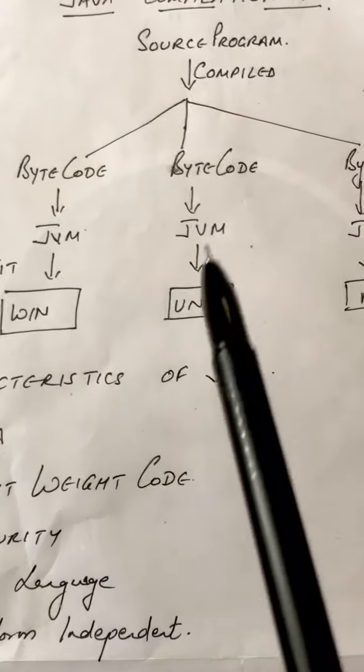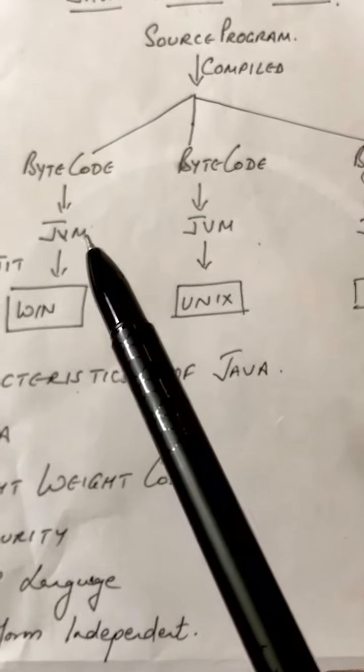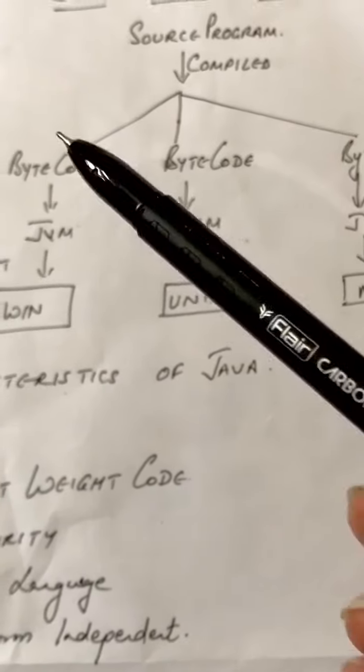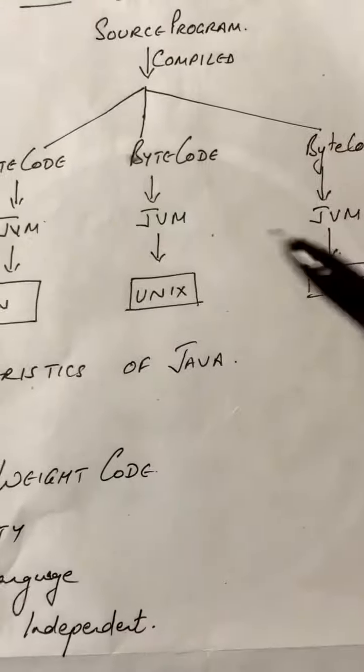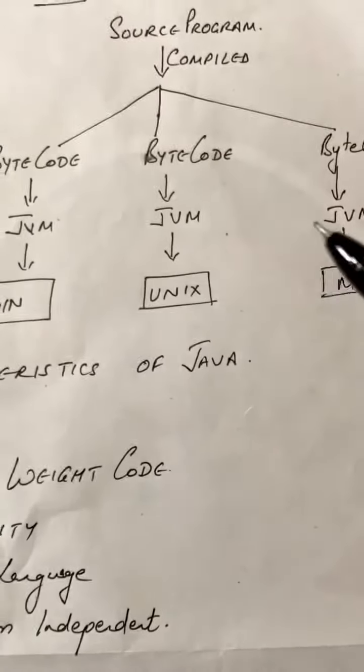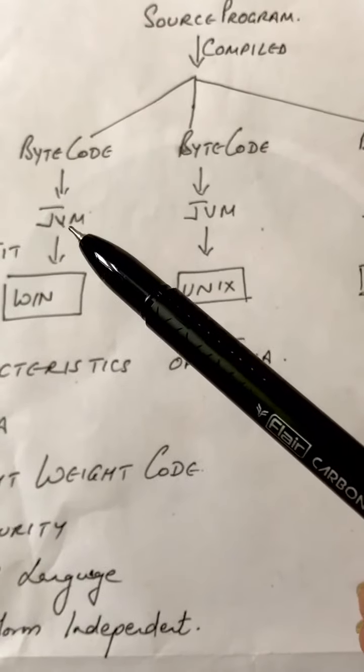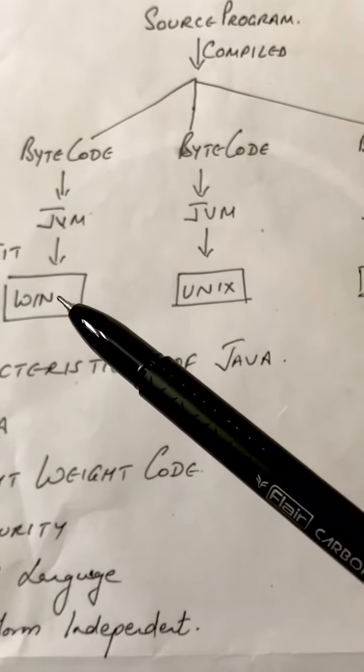Before it reaches the machine, it has to go through JVM, that is Java Virtual Machine. So each bytecode is using JVM. Now entering into JVM, which is a virtual machine, and this virtual machine is not bothered what type of operating system is used by the computer.